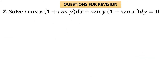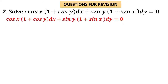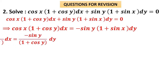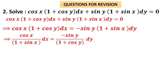Let us move on to question number 2: Solve cos x·(1+cos y)dx + sin y·(1+sin x)dy = 0. Push the second term to the right-hand side: cos x·(1+cos y)dx = −sin y·(1+sin x)dy. Keep cos x as is and bring (1+sin x) to the left, giving cos x/(1+sin x) dx = −sin y dy, with (1+cos y) pushed to the right-hand side.